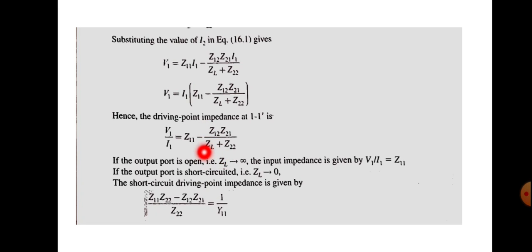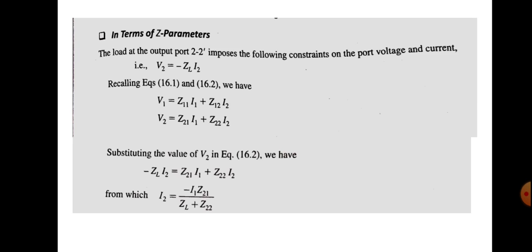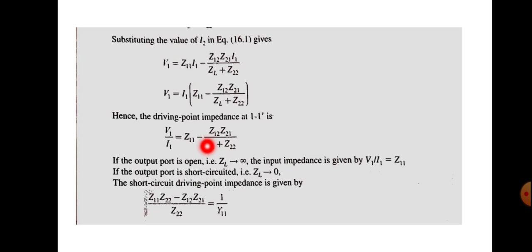Now let us examine two cases. When load impedance Z_L is infinity, it means the output port is open-circuited. In this case, the term Z12·Z21/(Z_L + Z22) becomes zero, so V1/I1 = Z11. Whenever the output port is open-circuited, the input impedance equals Z11.